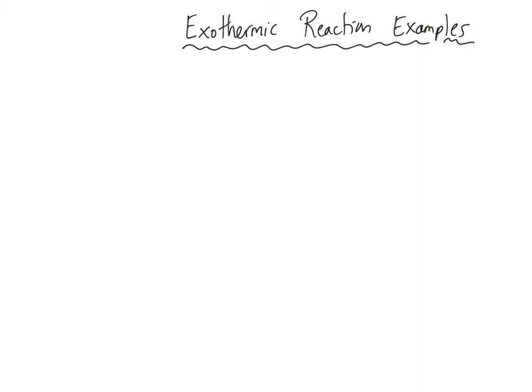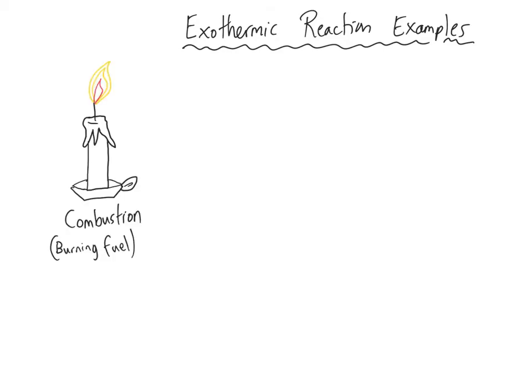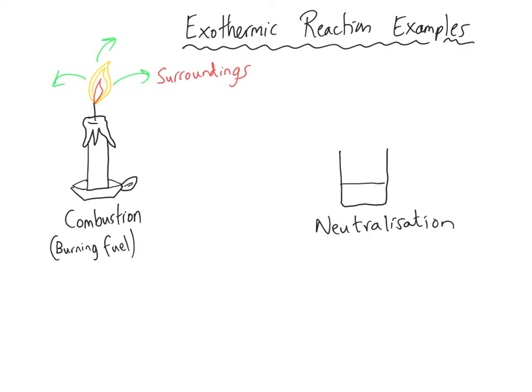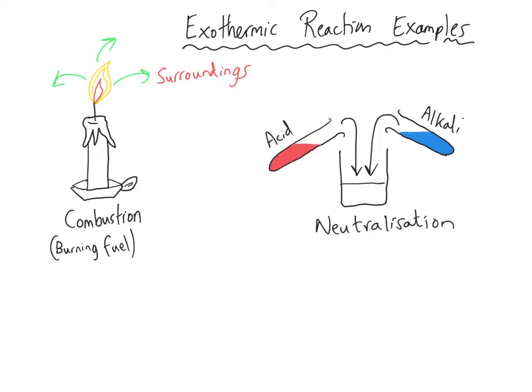There are many different examples of exothermic reactions. First of all, combustion — whenever a fuel burns, this gives out a huge amount of energy to the surroundings, so combustion reactions are very exothermic. Less obvious but definitely exothermic are neutralisation reactions, where an acid and an alkali react together to make a neutral salt. Those are also exothermic.